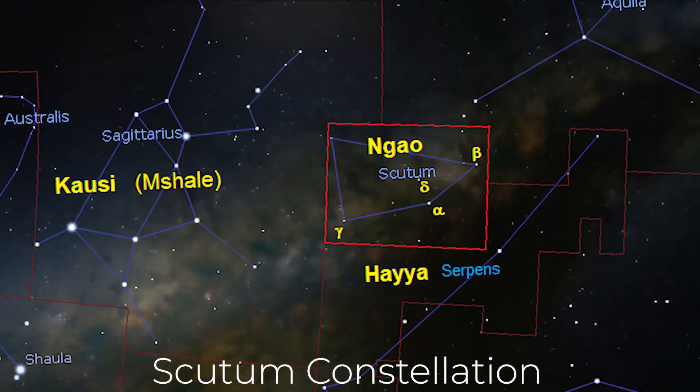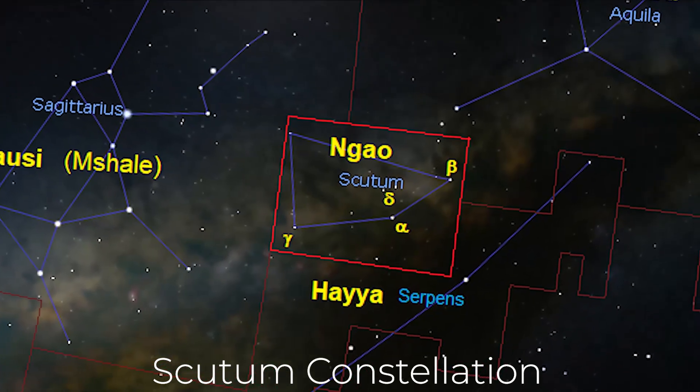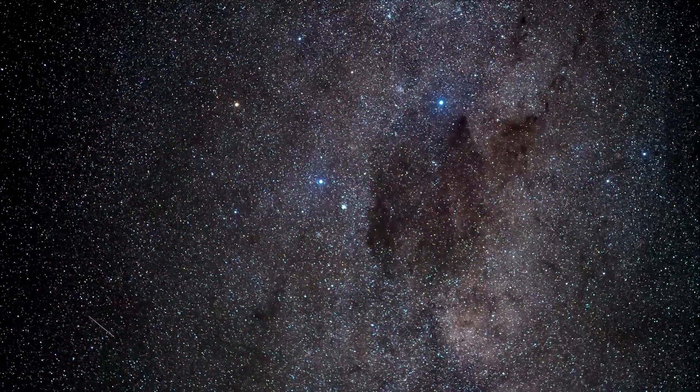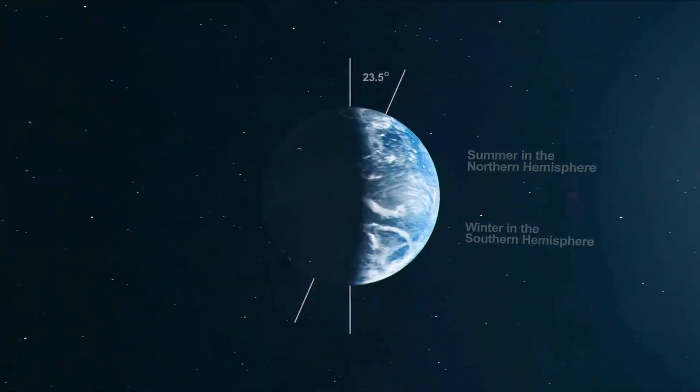This is the Scutum constellation. It is a small and faint equatorial constellation, which appears highest in the evening sky in the months around June from the Northern Hemisphere.